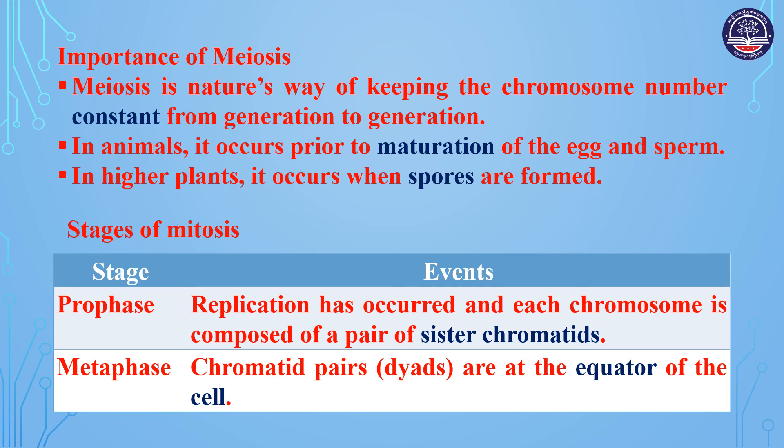Stages of mitosis. Prophase: replication has occurred and each chromosome is composed of a pair of sister chromatids.